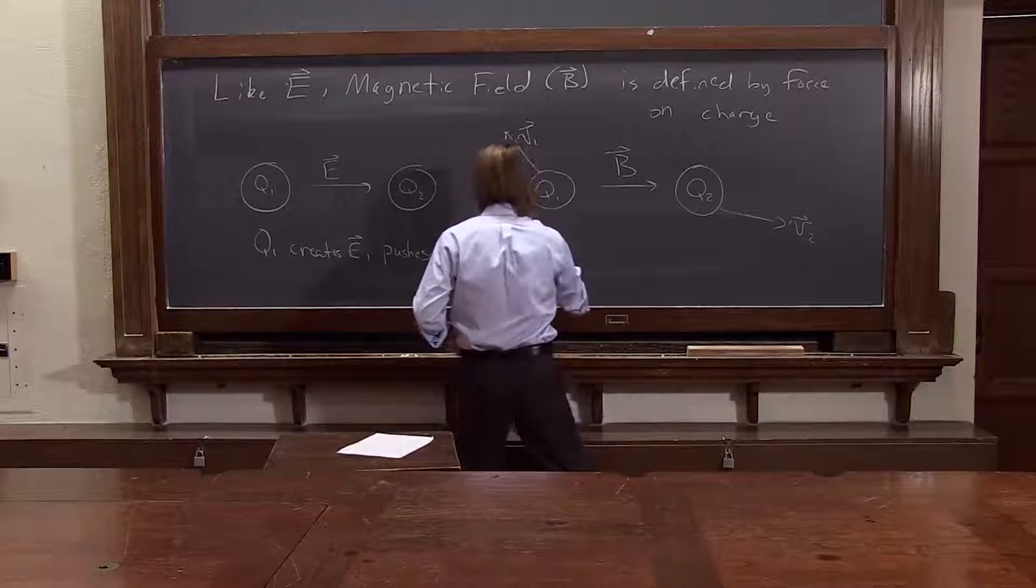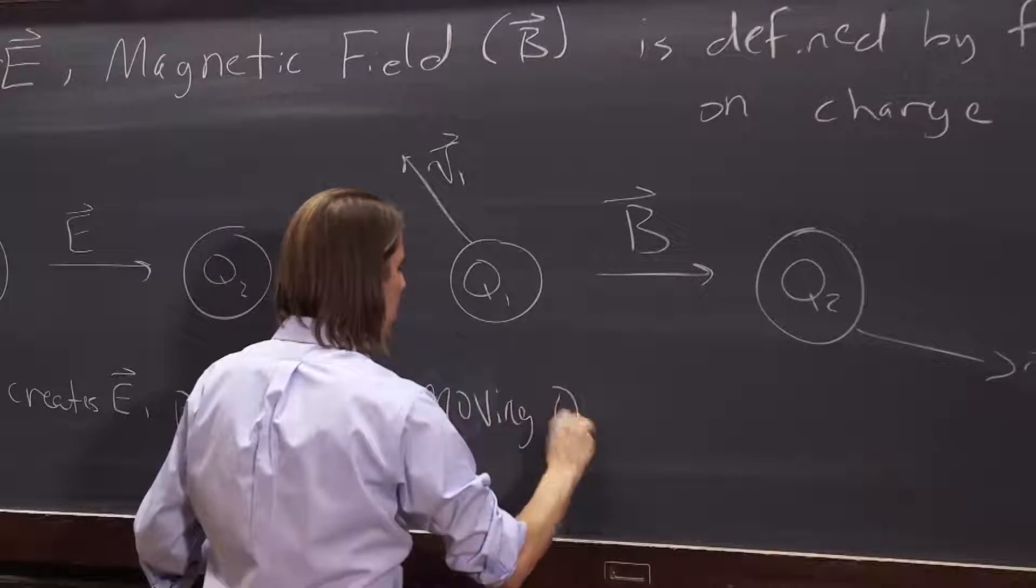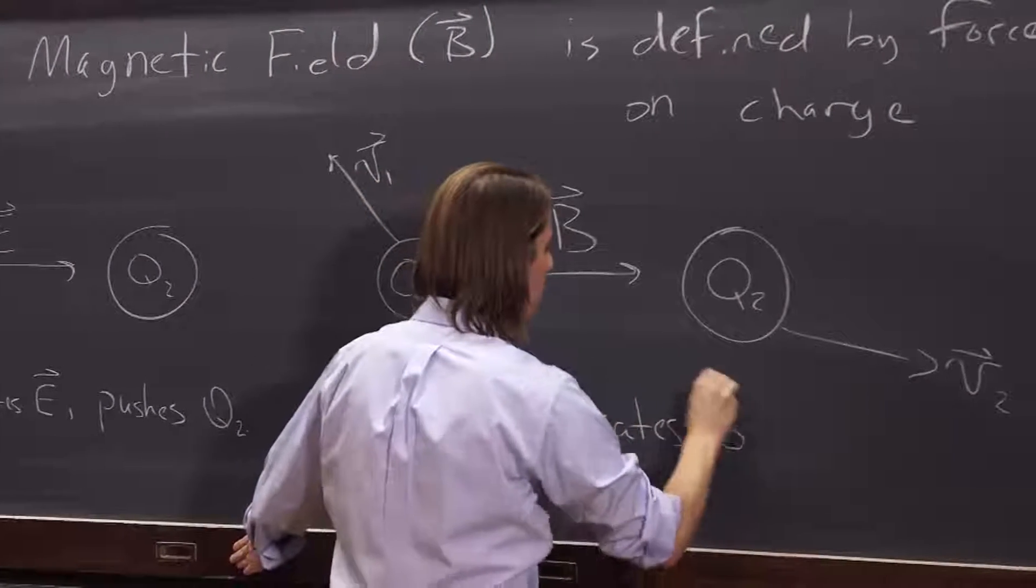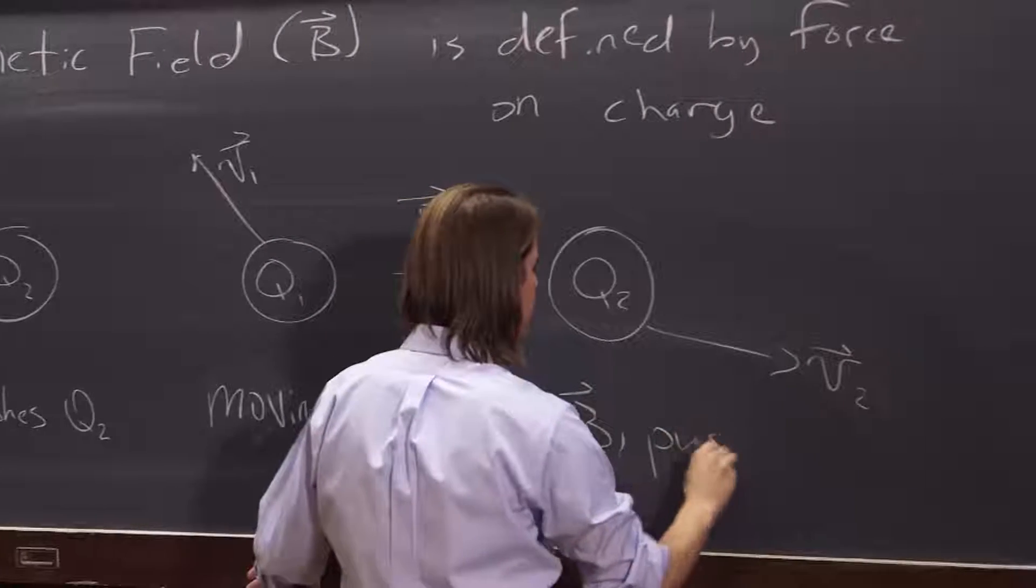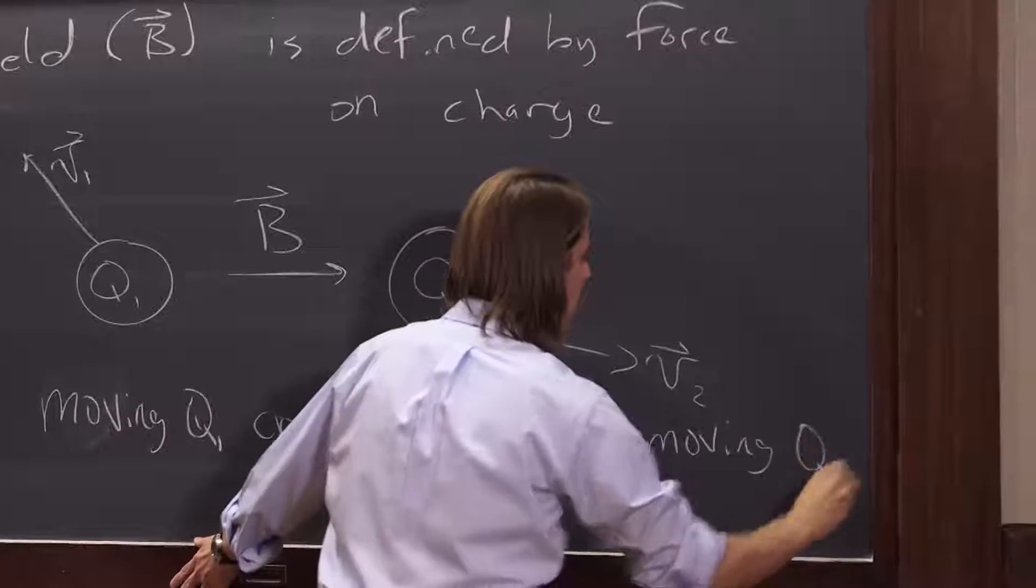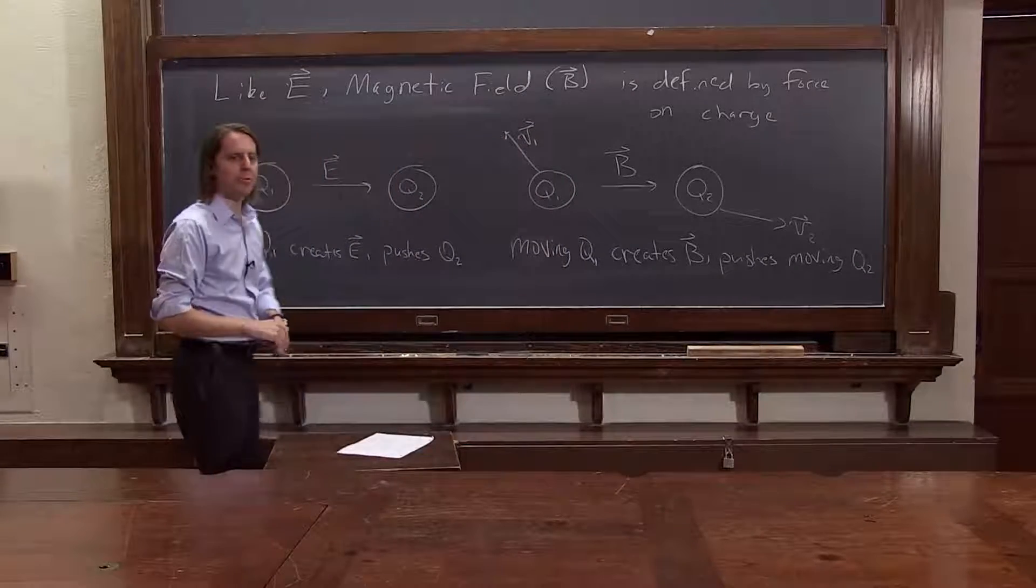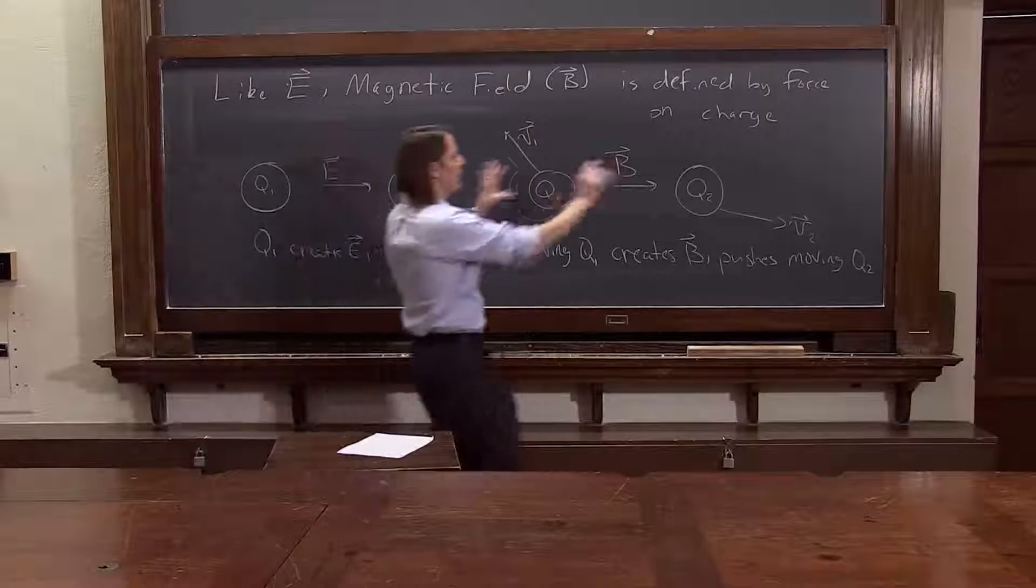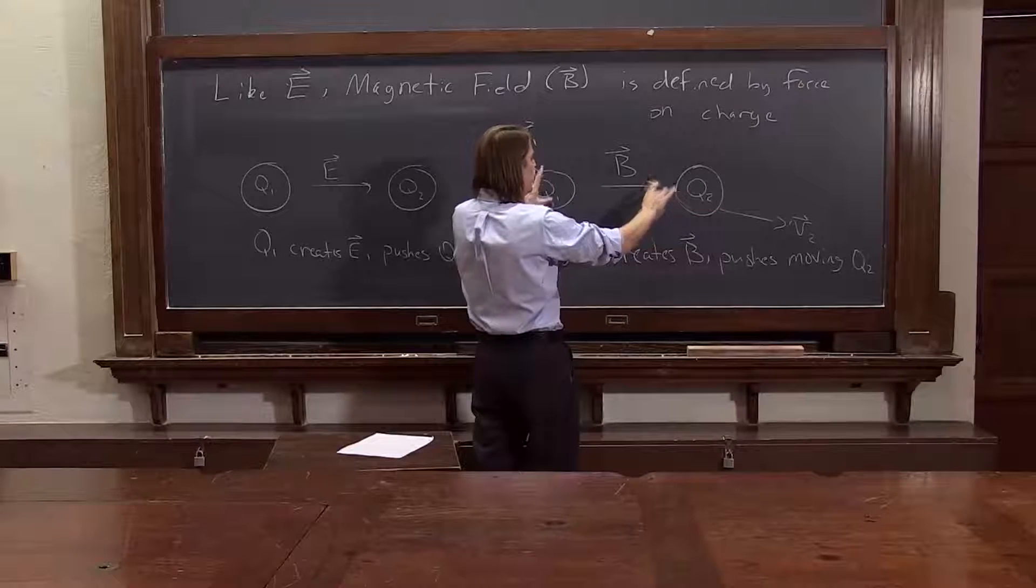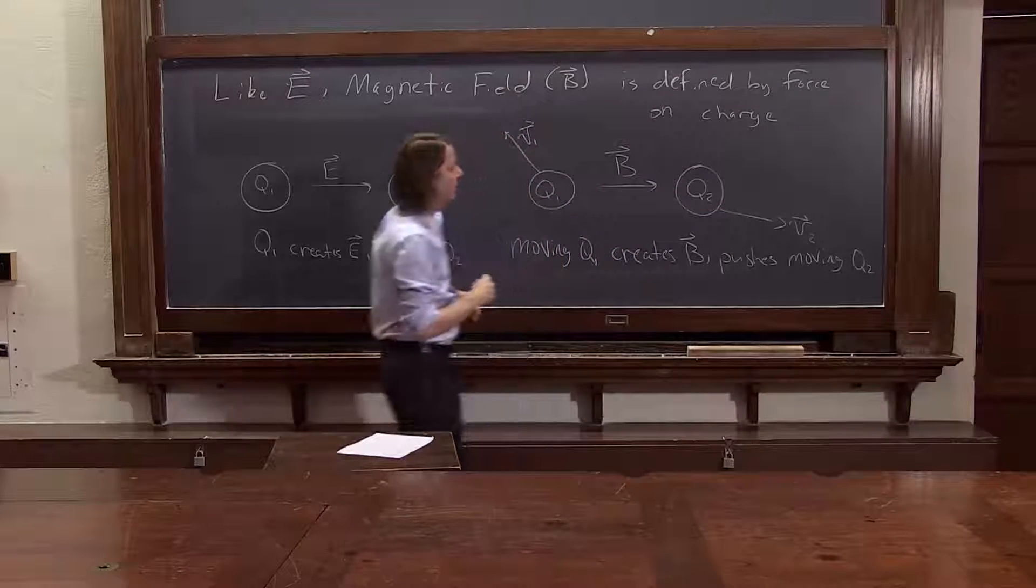Things have to be moving, Q2. So a moving Q1 creates B, and it pushes a moving Q2. The charges have to move. If these charges are not moving, you just have the electric field and the electrostatic force. If they're moving, you might also have a magnetic field and a magnetic force, in addition to the electric field and the electric force.